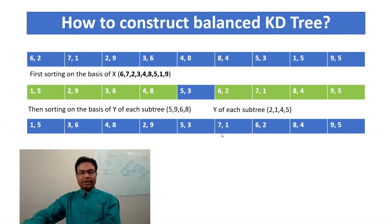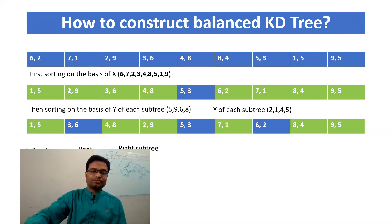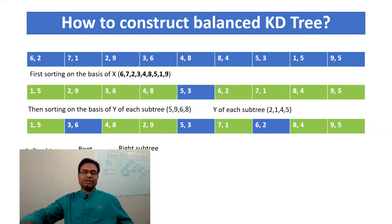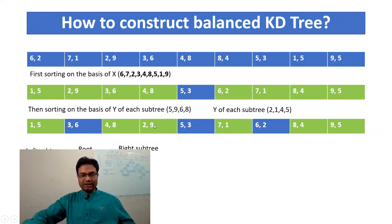Now find the root node of the subtree. Since we have only four elements, you can take either the left-middle or right-middle — whichever you choose, keep it consistent throughout. In this case, after sorting, I consider three-six as the parent node of the left subtree. Similarly six-two is the middle of the right subtree, so it becomes that subtree's root.